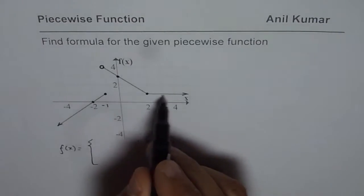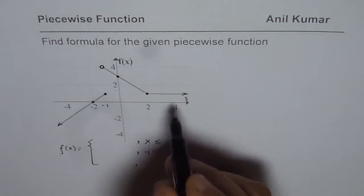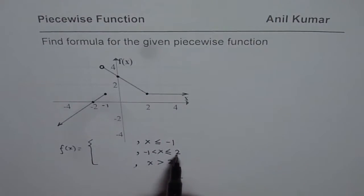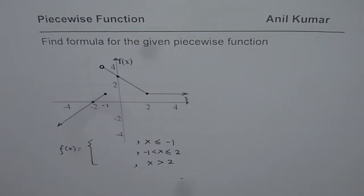The third piece is a horizontal line which is extended to infinity, so this is when x is greater than two. Since we have considered two as part of the second piece, we keep this as x greater than two. Now let us try to find the equation of each piece.